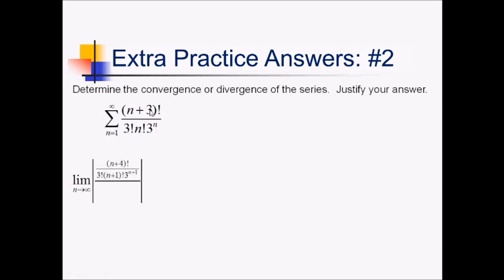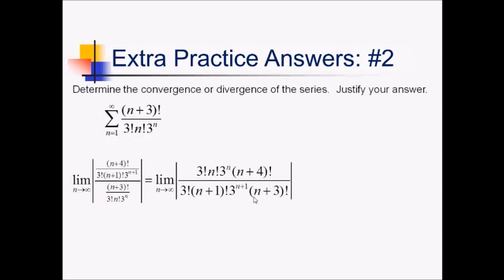Time to flip this thing to get a fraction that's a little easier to simplify. In the numerator I've got (n+4)! times 3! times n! times 3^n all upstairs. Downstairs I have 3!, (n+1)!, 3^(n+1), and (n+3)!. The 3 factorials cancel outright, which is nice. Then we have n! versus (n+1)!, which reduces to just leave (n+1) downstairs. 3^n over 3^(n+1) leaves me with a 3 upstairs after subtracting exponents.